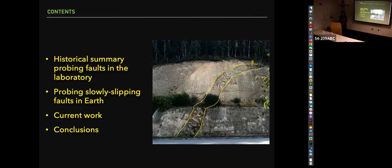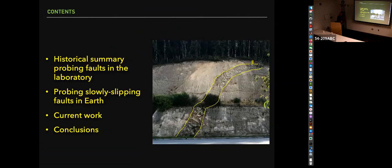Apologies to all of you and anybody who might be listening online for that painful experience. So as I mentioned, we'll start with a historical summary of the work and what leads us up to today. We'll start with laboratory and eventually simulation of laboratory experiments, then look at slow slip in faults in Cascadia, and come back to current work including some work we did at Parkfield, and work we're currently doing elsewhere and back in the laboratory.